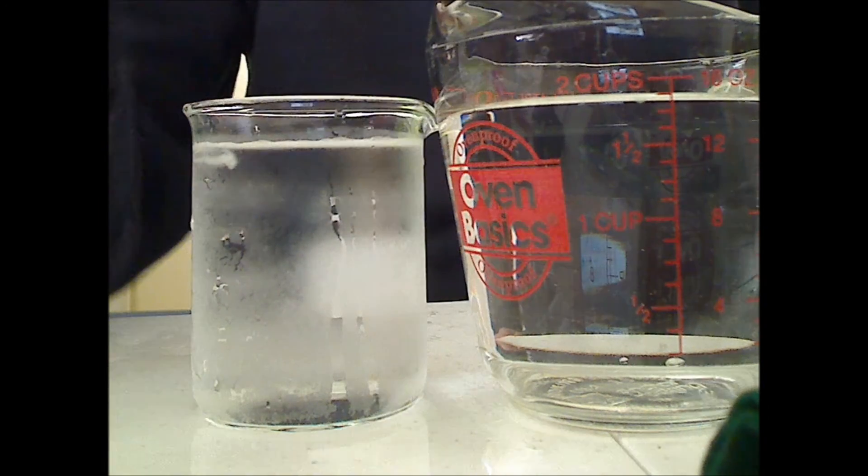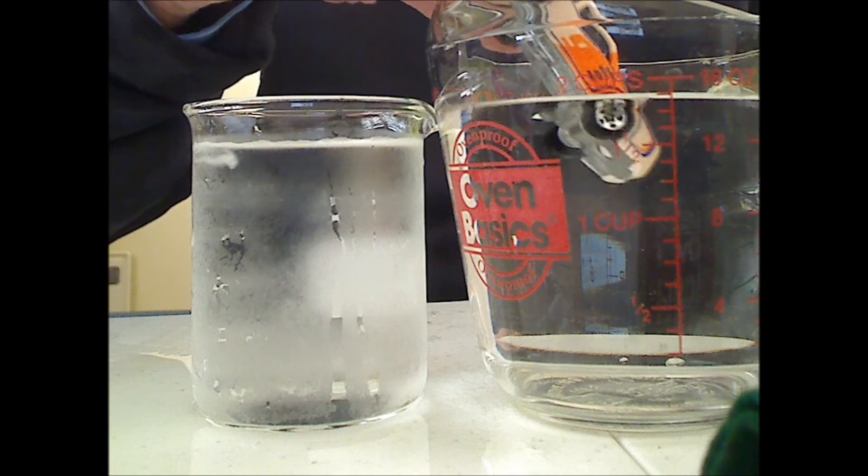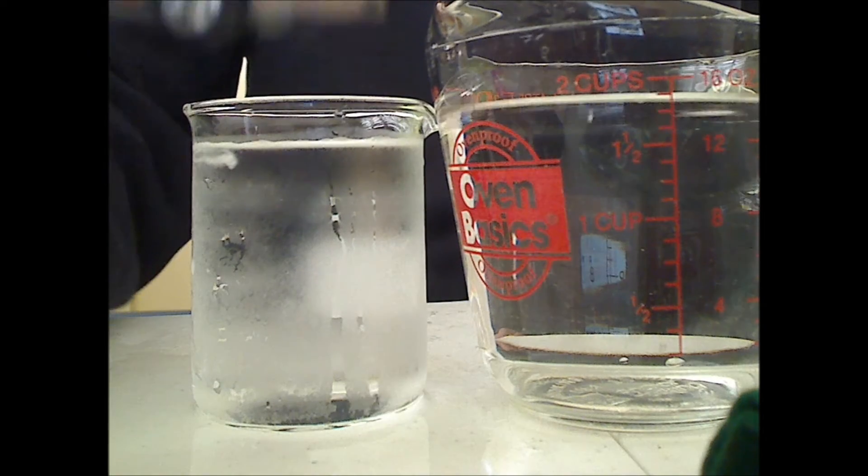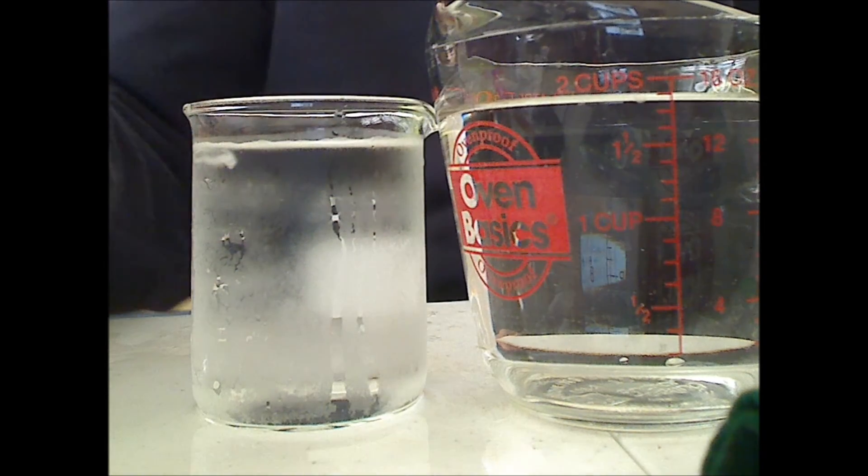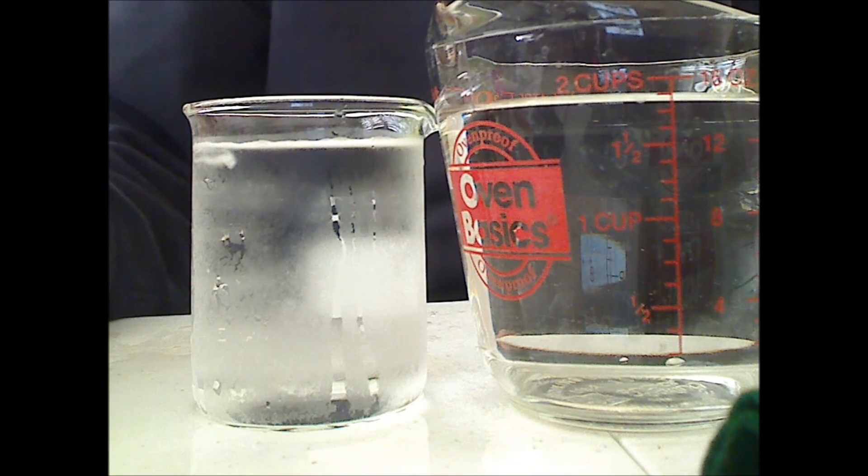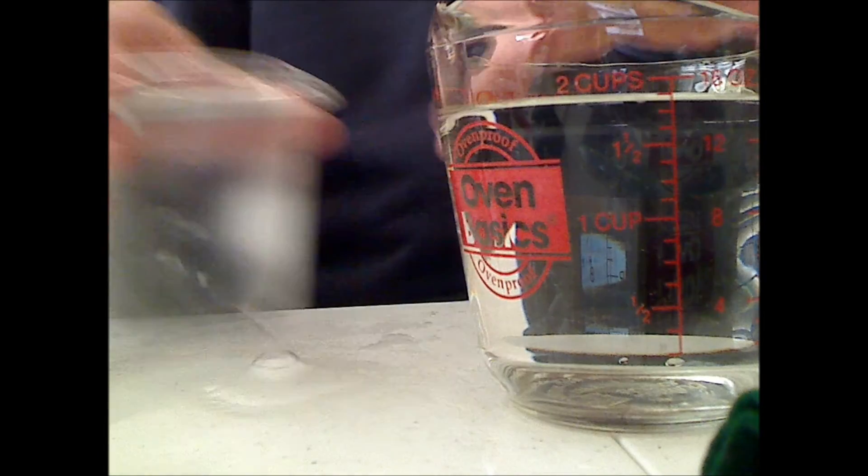And then if I put it in warm water, I won't put it all the way in, it changes back to the original color. An example of a thermochromic process and another example that I'd like to show you involves thermochromic cups.